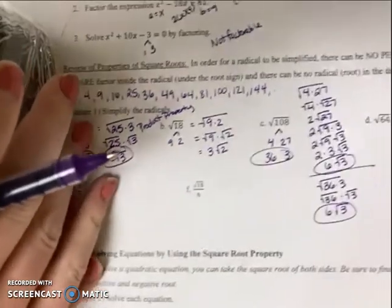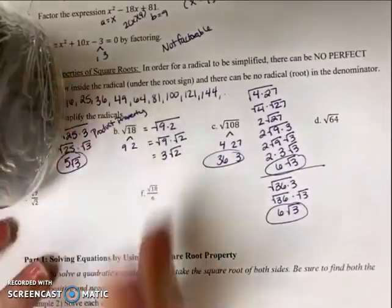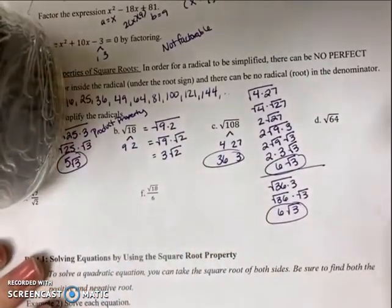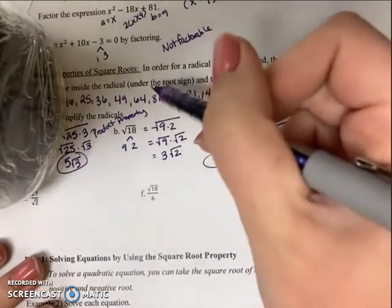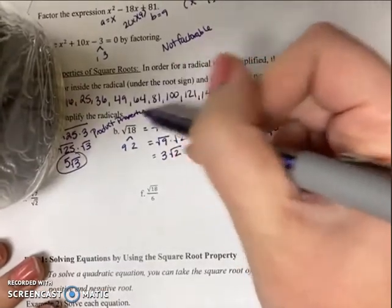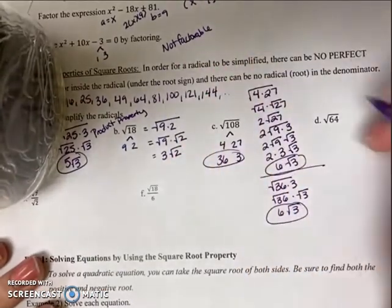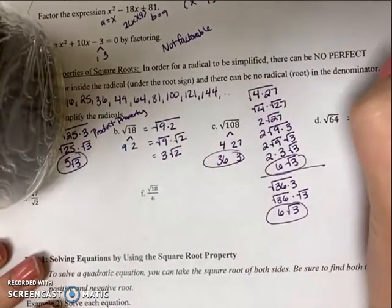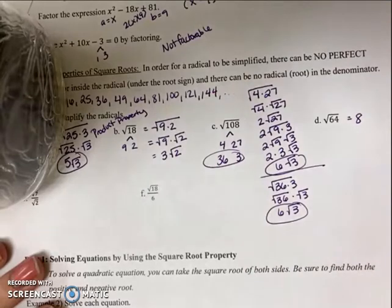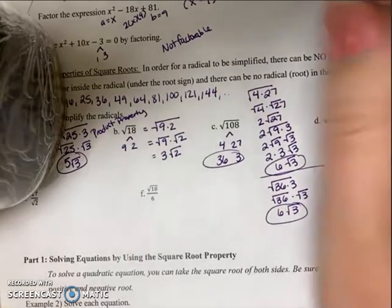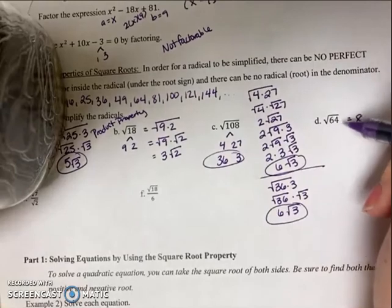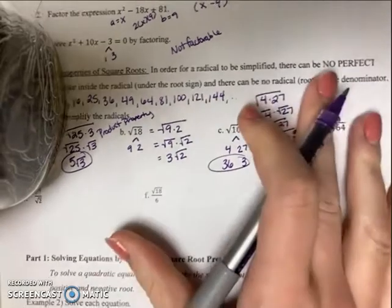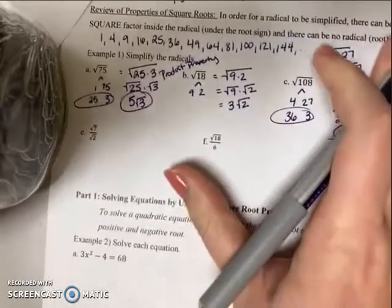Part D: we have the square root of 64. 64 is a perfect square of 8, so the answer is simply 8. Whenever you have the square root of a perfect square, you just get a whole number.